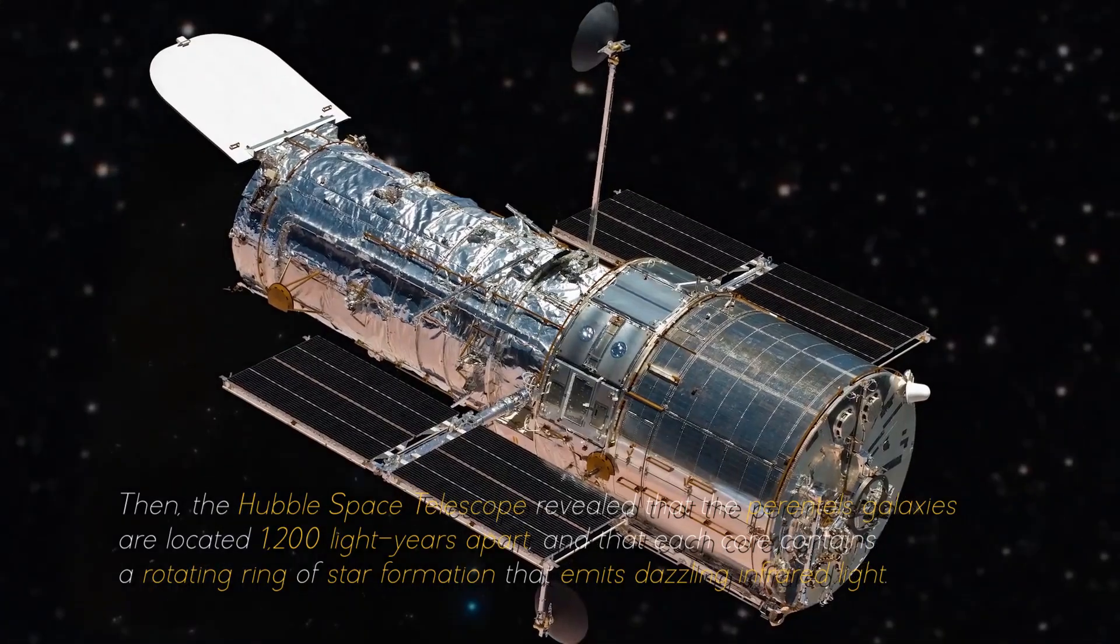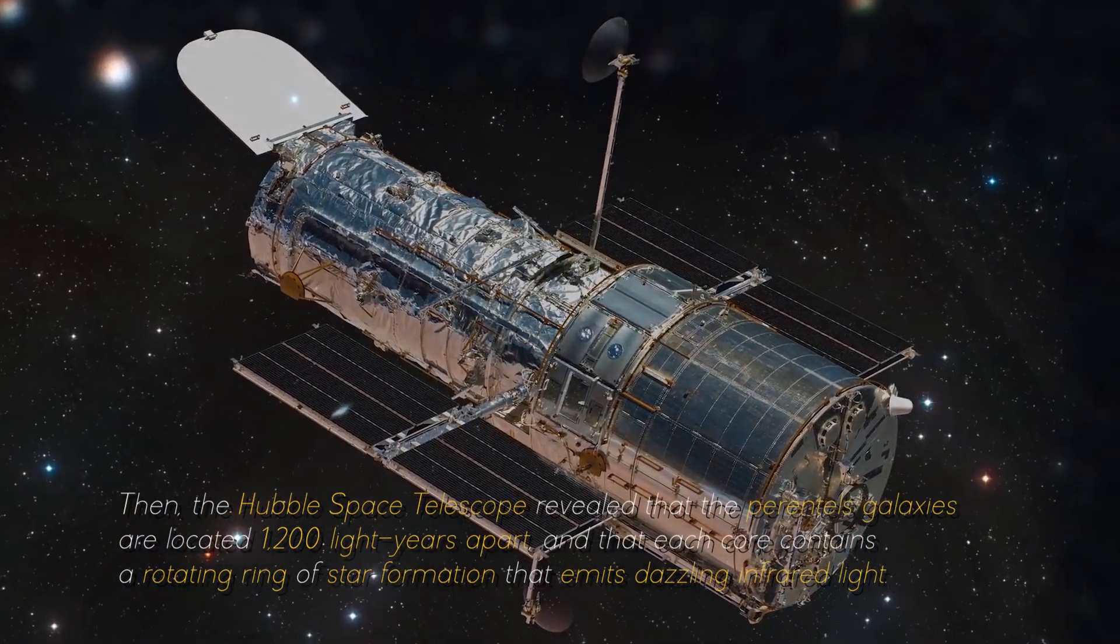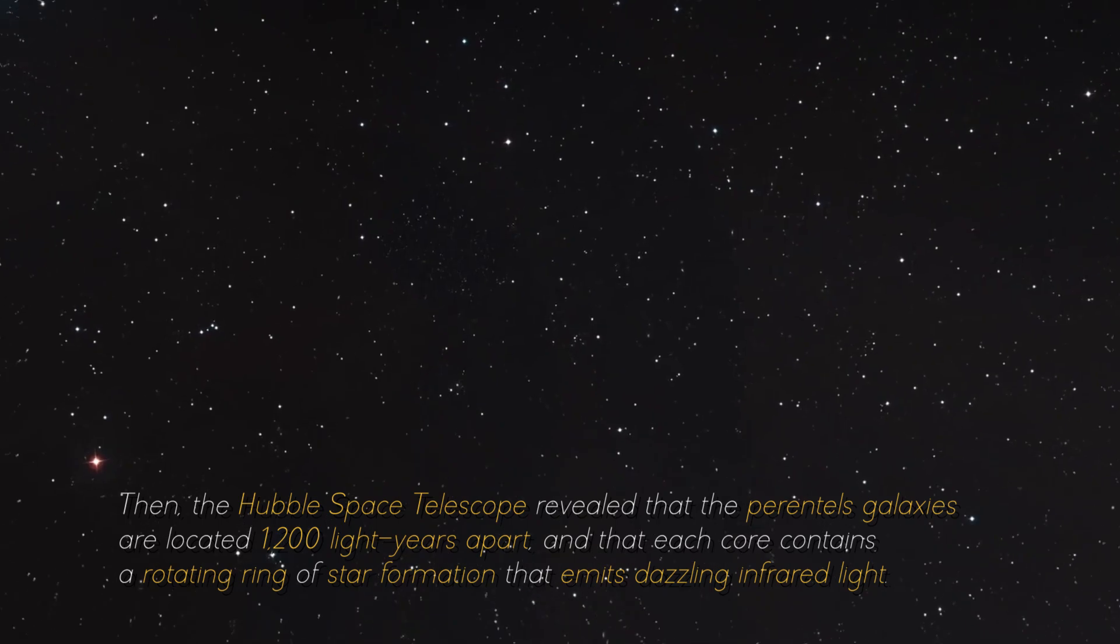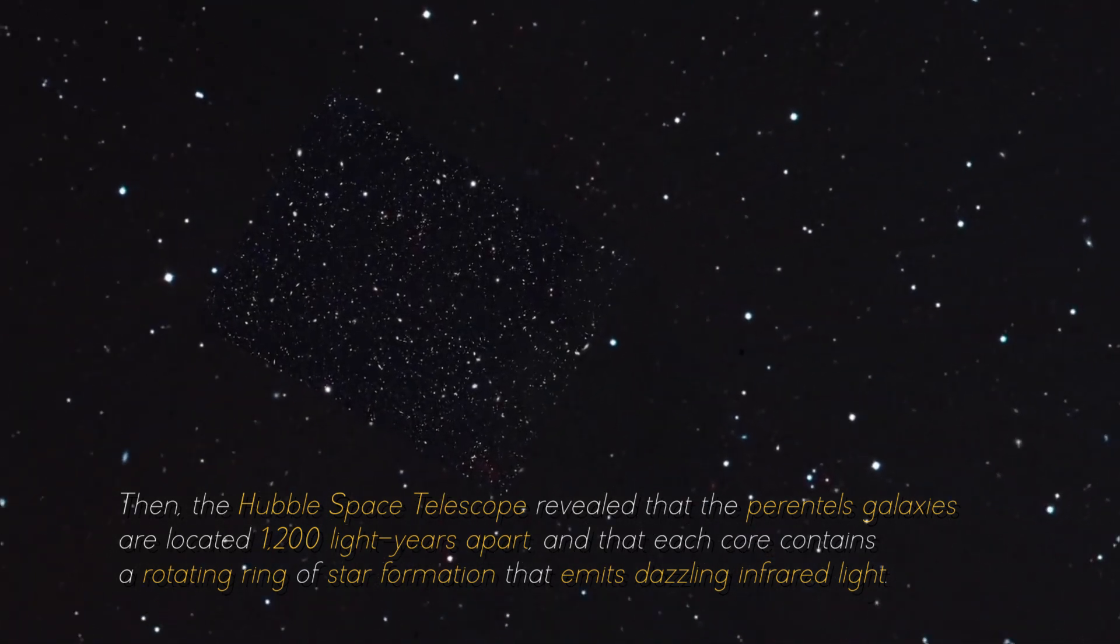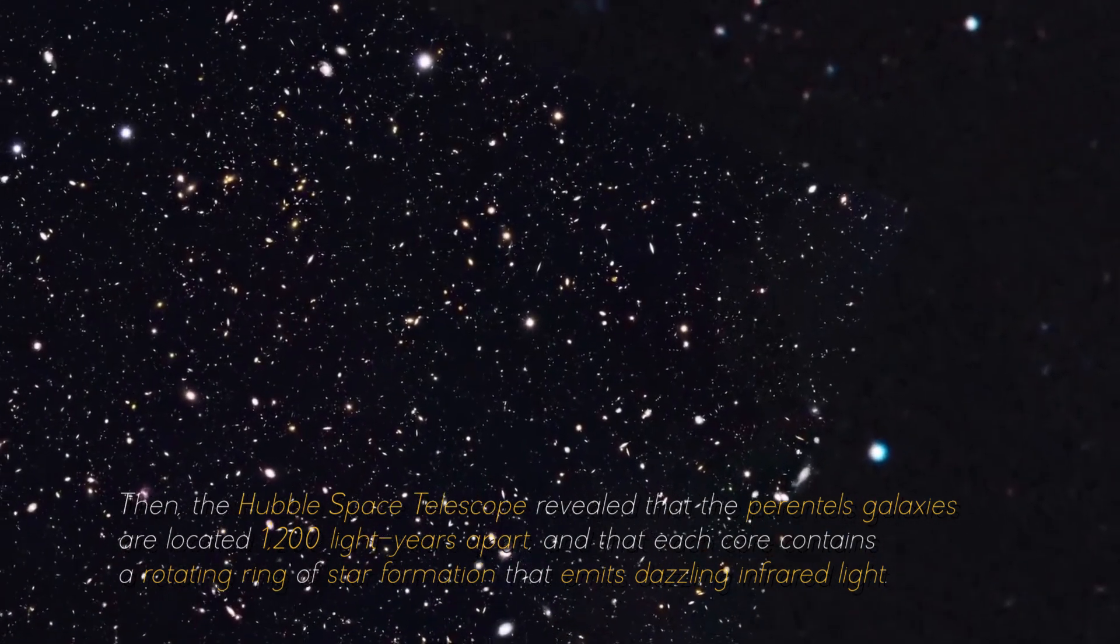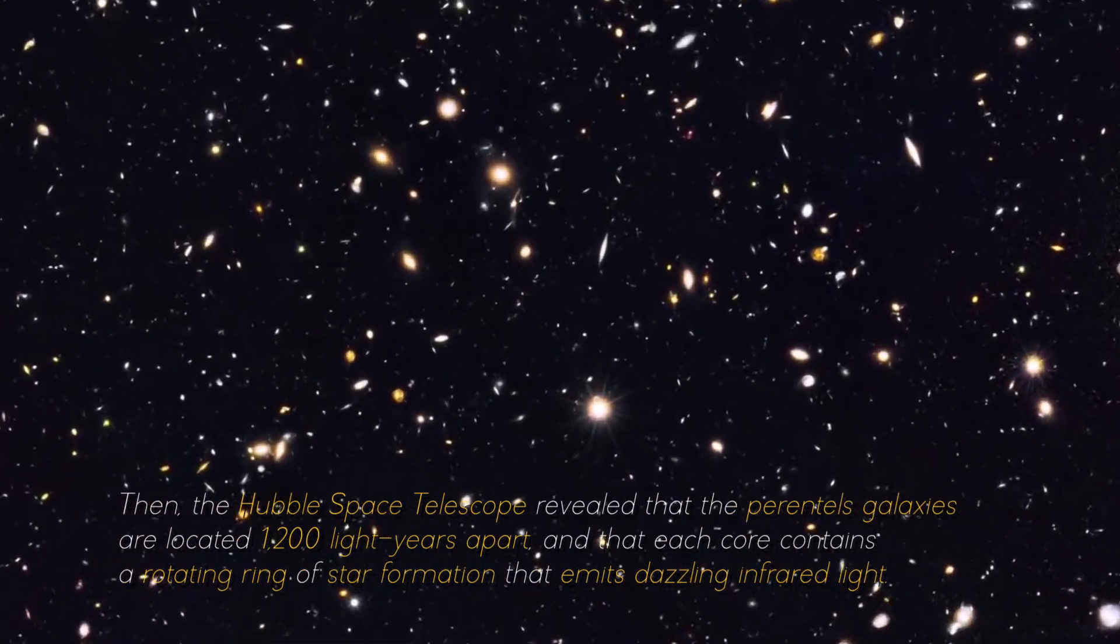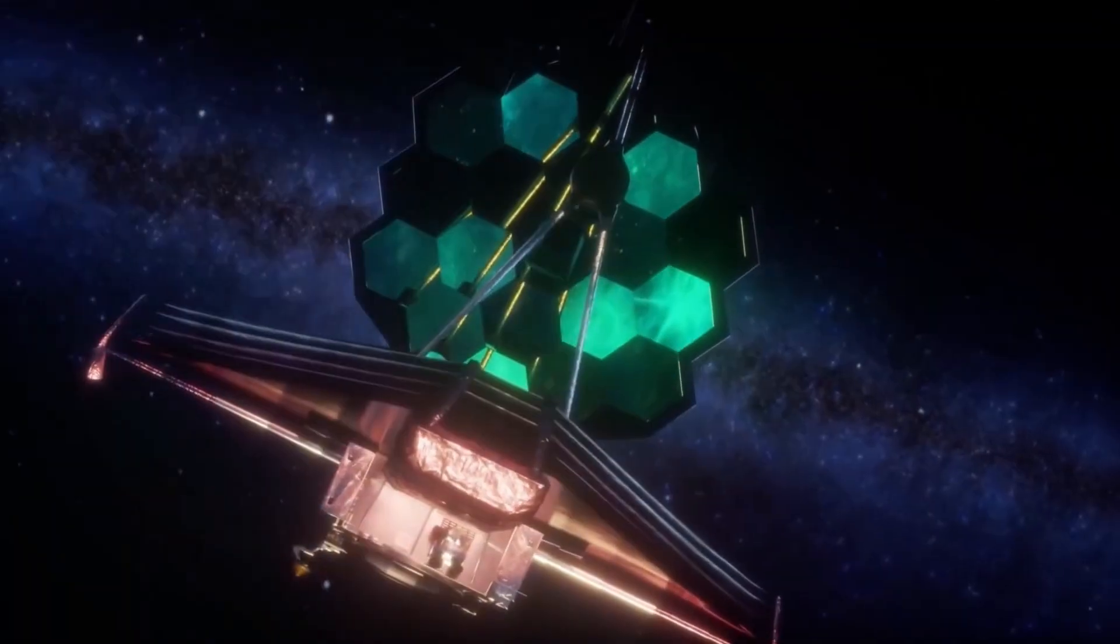Then, the Hubble Space Telescope revealed that the parental galaxies are located 1,200 light-years apart, and that each core contains a rotating ring of star formation that emits dazzling infrared light.